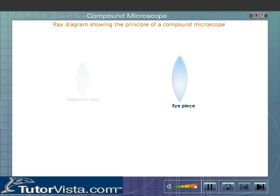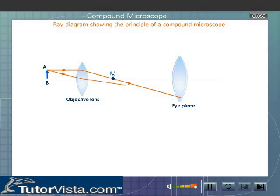The ray diagram shows the principle of a compound microscope. The object is mounted on the stand below the microscope tube. The objective lens forms a real, inverted, and magnified image A'B' of the object. The image A'B' acts as an object for the eyepiece.